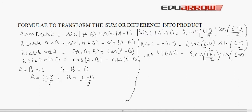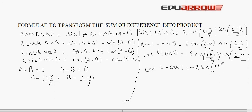And cosC minus cosD is equal to −2 sin[(C+D)/2] sin[(C−D)/2]. These are the sum-to-product formulas.